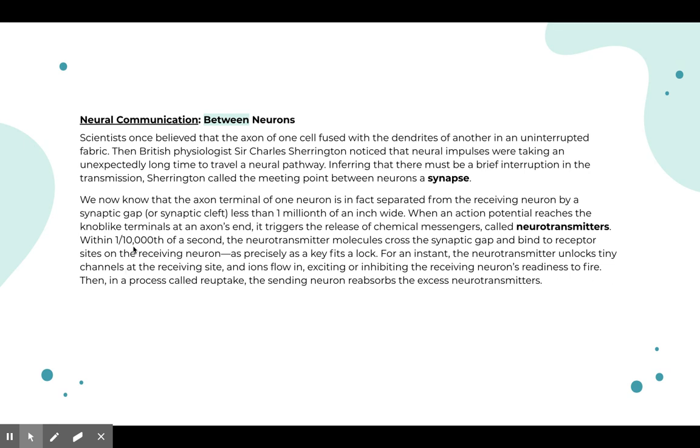So within one ten-thousandth of a second, this seems like an unreal amount of time, but a very short amount of time, the neurotransmitter molecules cross the synaptic gap. They cross a teeny little gap really quickly and bind to a receptor sites on the receiving neuron. They go to the next one and they fit perfectly, they fit like a key fits in a lock. For an instant, the neurotransmitter unlocks tiny channels at the receiving site and ions flow in, exciting or inhibiting the receiving neuron's readiness to fire, kind of like what happened in the last one. Then in a process called reuptake, the sending neuron reabsorbs the excess neurotransmitters. That's a lot of science-y information, but the biggest thing to know is that there is this small little gap that the information crosses, and when it does, it releases these things called neurotransmitters that communicate some kind of message to something else that says, this is how you should be feeling or acting now.